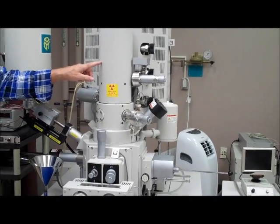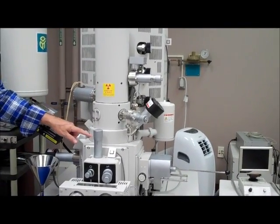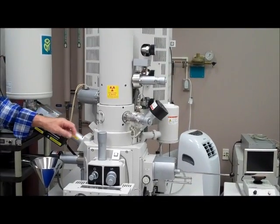One of them is called a condenser lens, which is at the top. And then there's an objective or focusing lens directly above the sample.